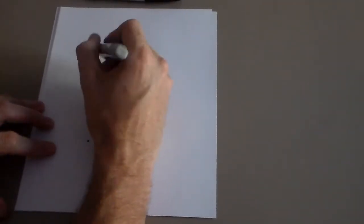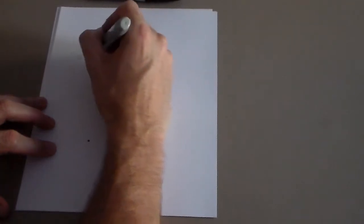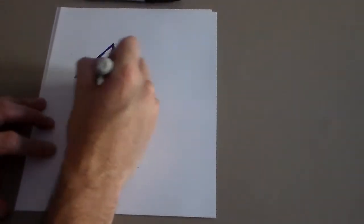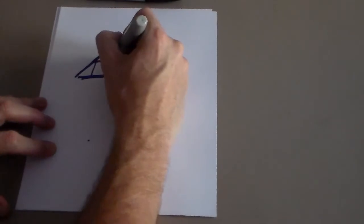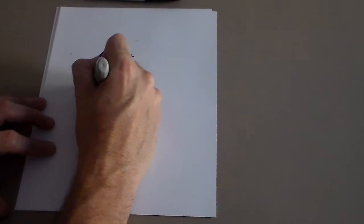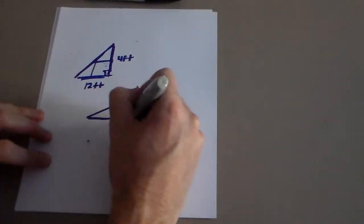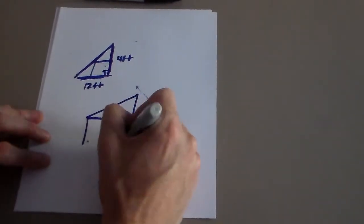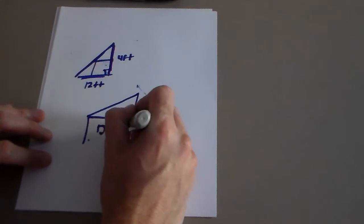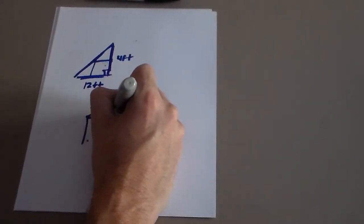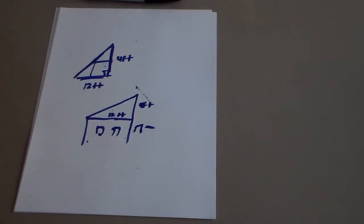Let's look at a couple of word problems. Let's say we've got a house here — here's part of your roof. Let's say from here to here is 4 feet, and from here to here is 12 feet. So if this was 4 feet and that was 12 feet, I want to see if you can find the slope of that roof. What's the slope of the roof?